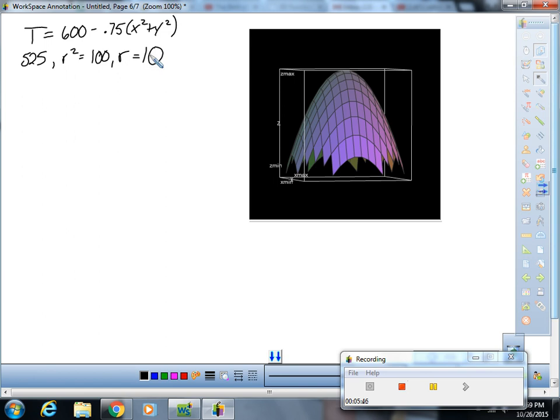Hopefully you understand that these isothermal curves are going to be circles. When I pick 550, you get R squared is equal to 66.7, and therefore R equals 8.2.